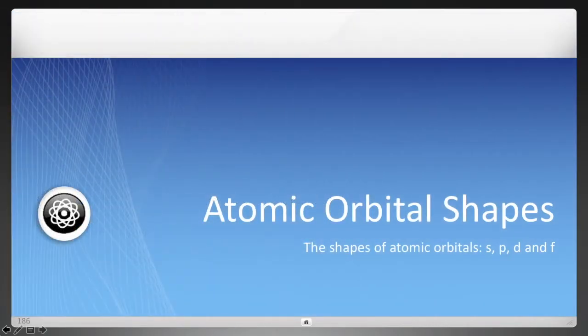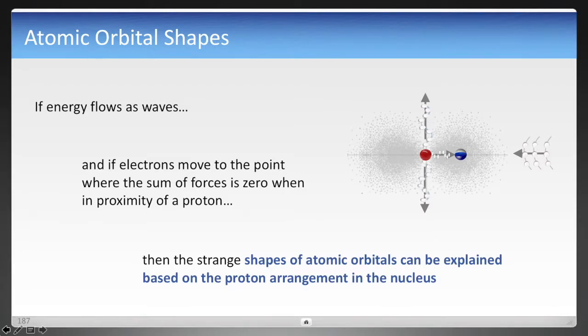Alright, so now we're going to cover orbital shapes. Last time we covered atomic orbitals, this time the path of the electron takes and the unique shapes that it makes. If energy flows as waves and in atomic orbitals it was suggested that electrons move to the point where the sum of the forces is zero when in proximity of a proton, then the strange shapes of orbitals can be explained based on the arrangement of protons. And again we're going to have the recently discovered pentaquark as the structure of the proton to thank for this one.